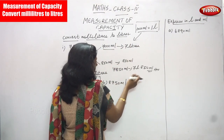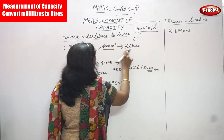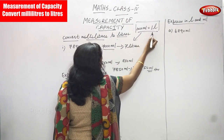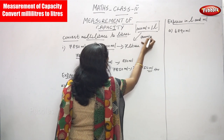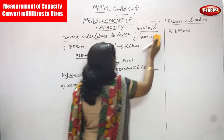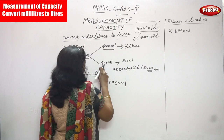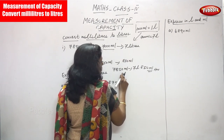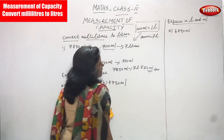The answer must be given in liters and milliliters. 7000 milliliters converts to 7 liters, because 1000 ml equals 1 liter, so 7000 ml equals 7 liters. Then 850 ml is written as it is. So 7850 ml is converted into 7 liters and 850 ml.